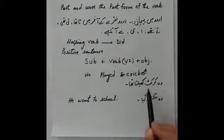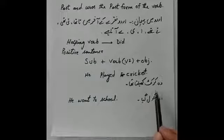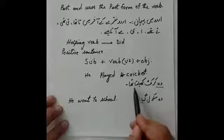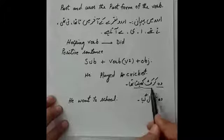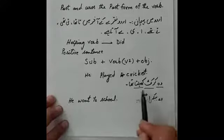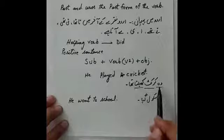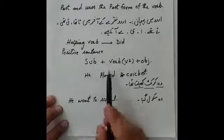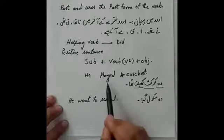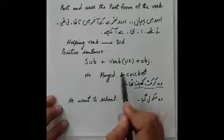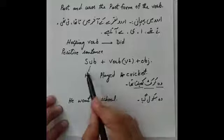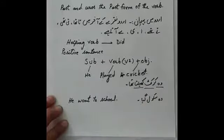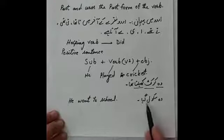مثال: وہ cricket کھیلتا تھا — یہاں 'وہ' آپ کا subject ہے، 'کھیلتا' میں verb ہے، اور 'cricket' آپ کا object ہے۔ وہ singular third person ہے تو verb آئے گی play اور اس کی second form ہے played۔ یعنی: subject آیا، verb کی second form آئی، پھر object آیا۔